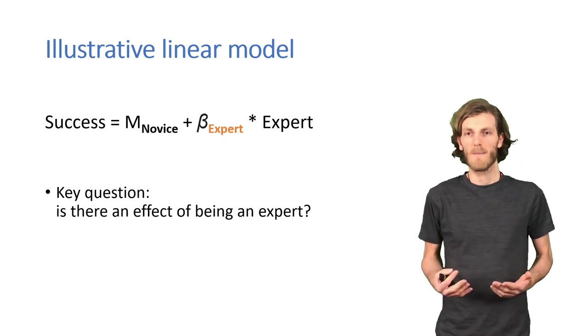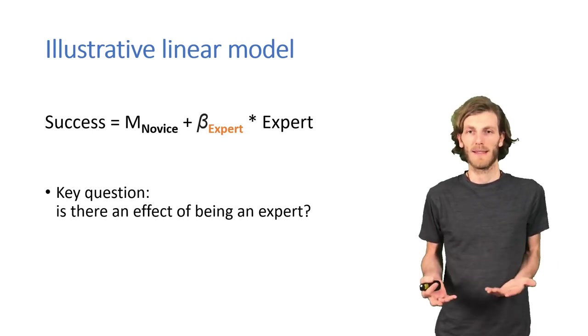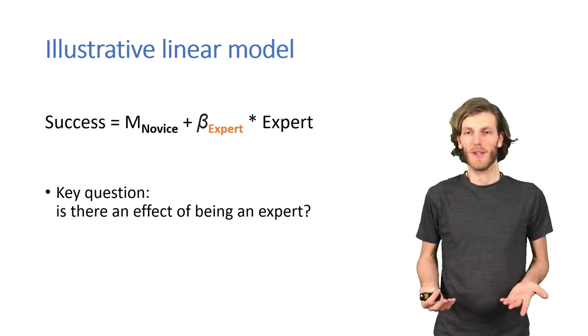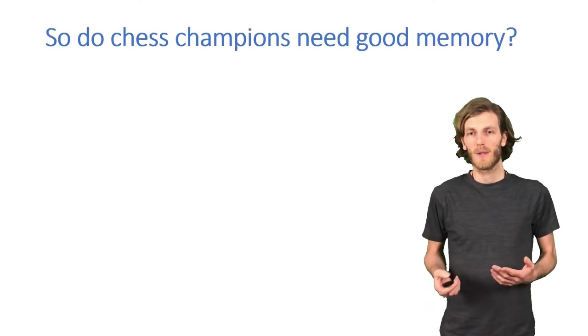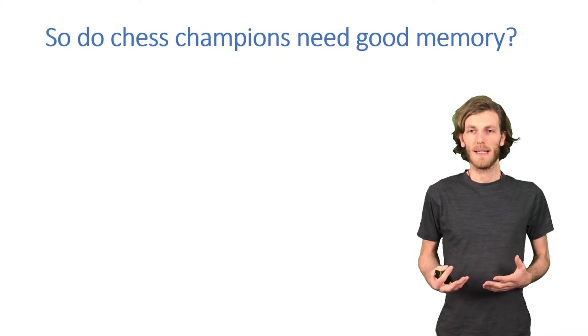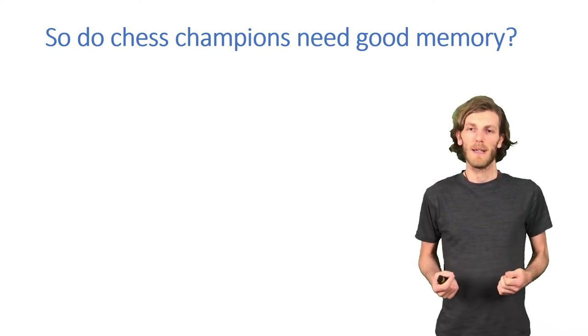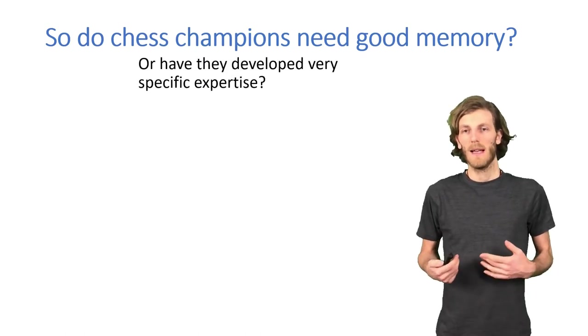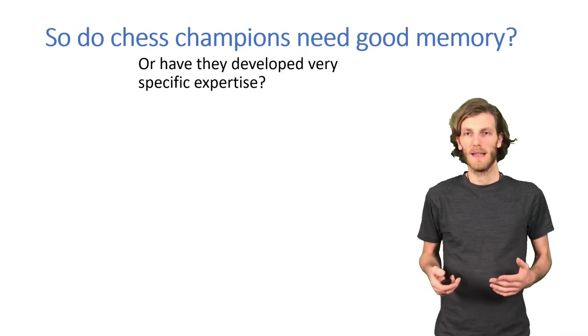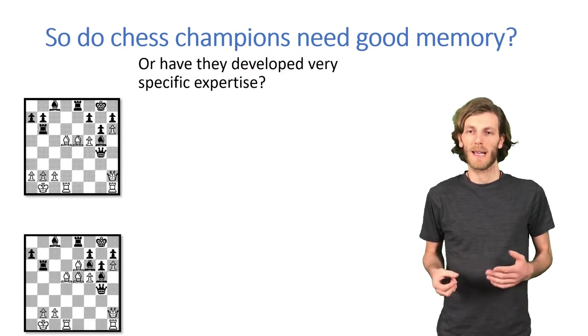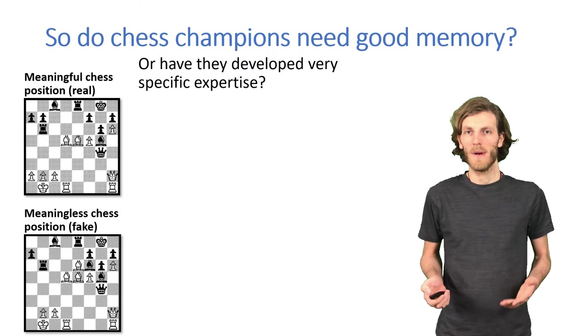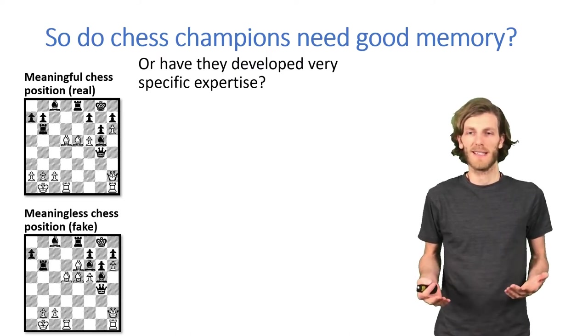However, with the data we just saw, we can't yet really tell what this is about. Is it just about chess players developing good memory? Is it about chess players having good memory before they start? So, we might want to dig deeper into this by testing whether the memory advantage is specific to chess games. And one study that has been done a couple of times for this is to let people look at different kinds of chess boards. Either real configurations that could actually occur in a game or random configurations that could not arise in a natural game.